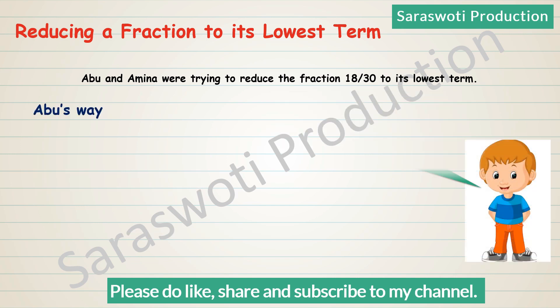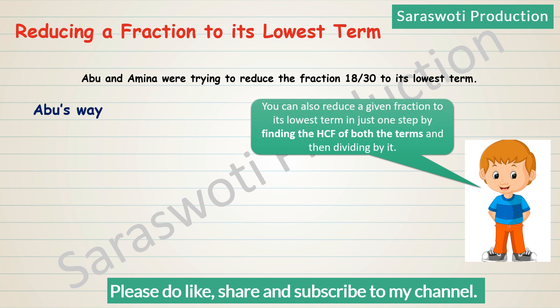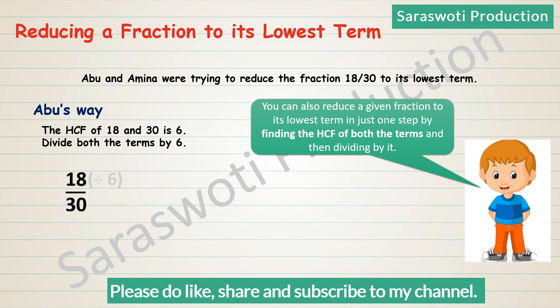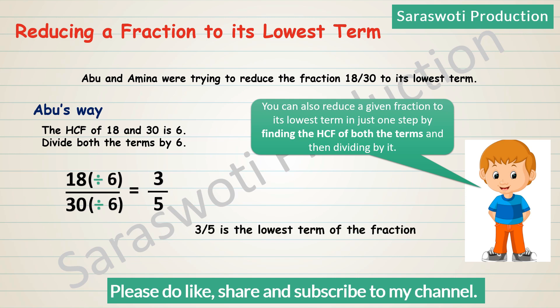Abu's way: you can also reduce a given fraction to its lowest term in just one step by finding the GCF of both terms and then dividing by it. The GCF of 18 and 30 is 6. Divide both terms by 6: 18÷6 over 30÷6 equals 3/5. Therefore, 3/5 is the lowest term of 18/30. Do you prefer Abu's way or Amina's way? In both ways, you can get the answer.